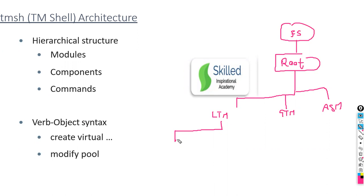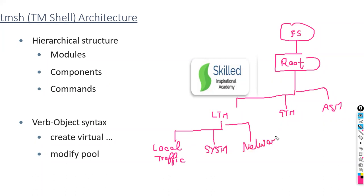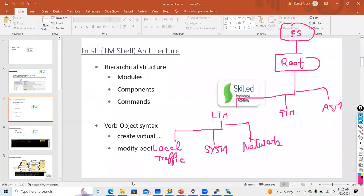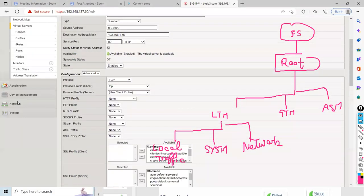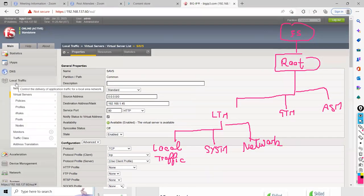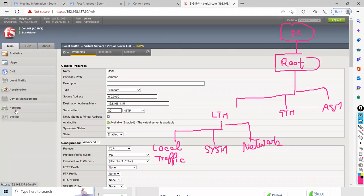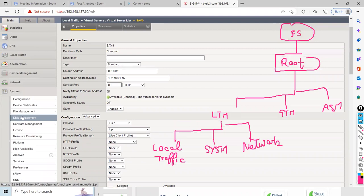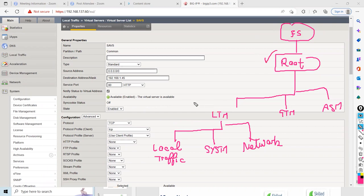When we talk about LTM module, LTM has components in it. The module is LTM. Now components — if I talk about LTM, it has Local Traffic as one component, System as one component, and Network as one component. You need to remember this. Some settings come under Local Traffic, some under Network, some under System tab — these are called your components. In the root directory you have modules, in modules you have components.